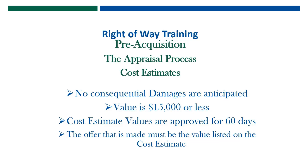There has to be no question in your mind concerning damages. Number two, the value has to be $15,000 or less in order to use it. The values for cost estimates are approved for 60 days and they have to be approved by the reviewer. They should be given to the reviewer right before you are ready to start your acquisition, because once the reviewer approves it, your clock is ticking — you have to get it to the reviewer right before you're ready to go so you won't cut into your 60-day window.